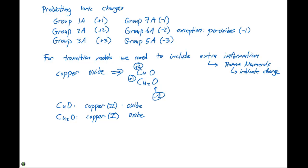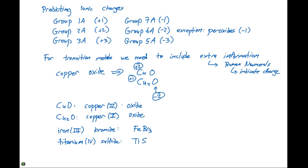Other examples: if we were given the name and then went to a formula. If we were given Iron(III) Bromide — Iron(III) Bromide has a plus 3 charge on the iron. Bromide is in Group 7A, so it's going to have a minus 1 charge, so this has to be FeBr₃ in order for the charges to cancel out. If we also looked at Titanium(IV) Sulfide — the titanium is going to have a plus 4 charge, the sulfur is in Group 6A which gives us a minus 2 charge, so that's going to be TiS₂.